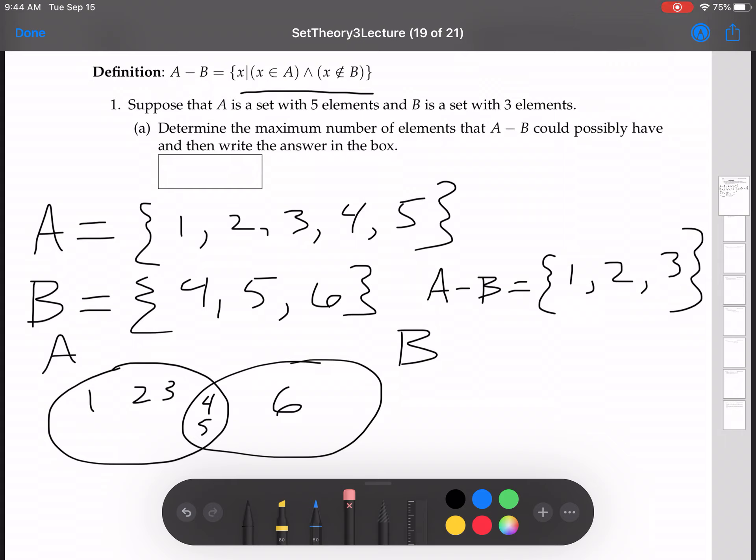Okay, so now look, A minus B, right? Cardinality of A minus B is 3. Remember, this is the number of elements when you put the absolute value around like that, so that's 3.